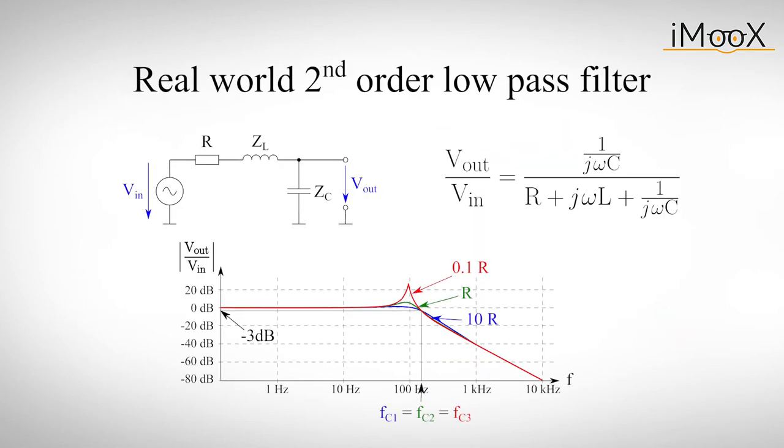We can also vary the values of L and C interdependently, such that the corner frequency stays the same. All these degrees of freedom can be used to alter the so-called characteristic of the filter.